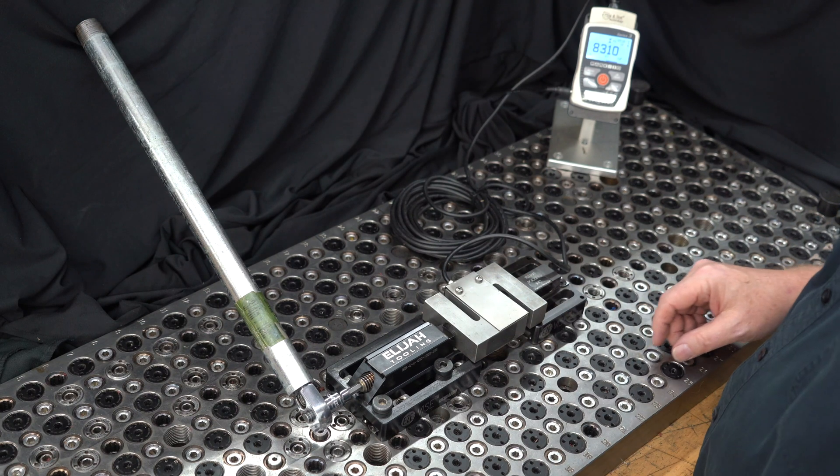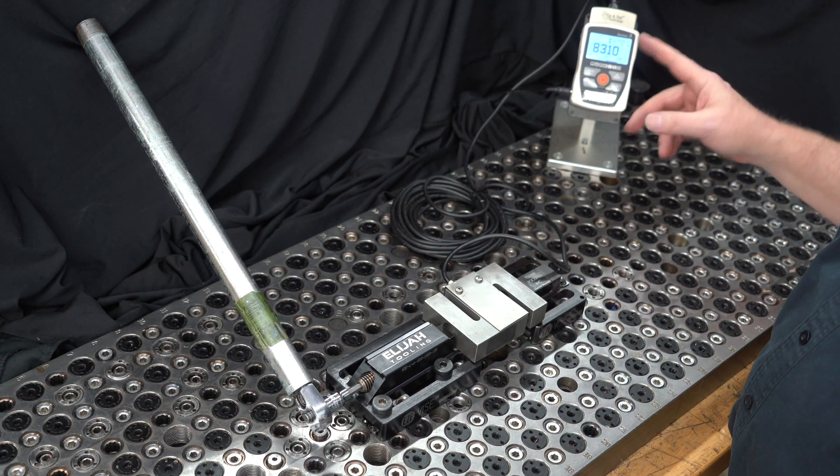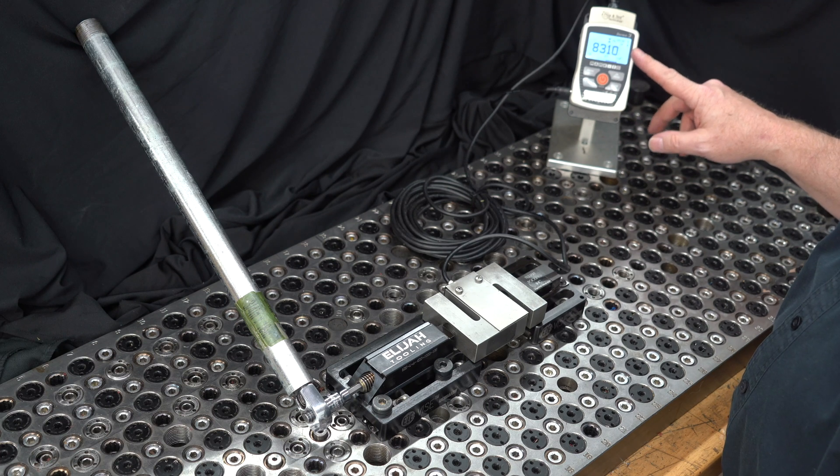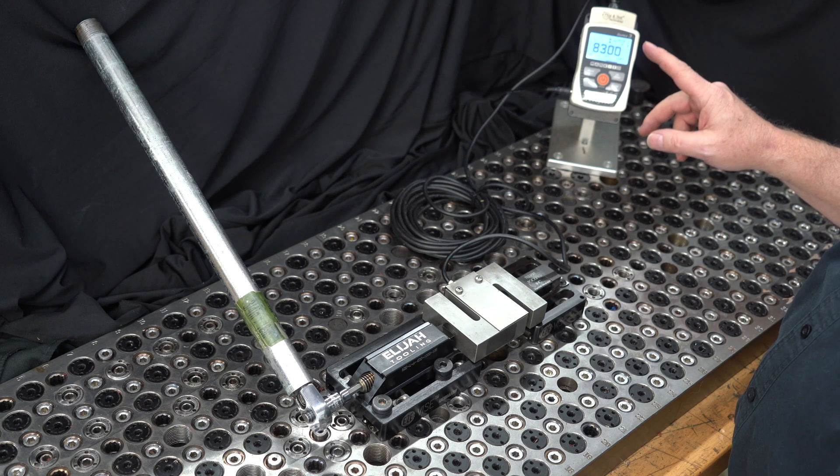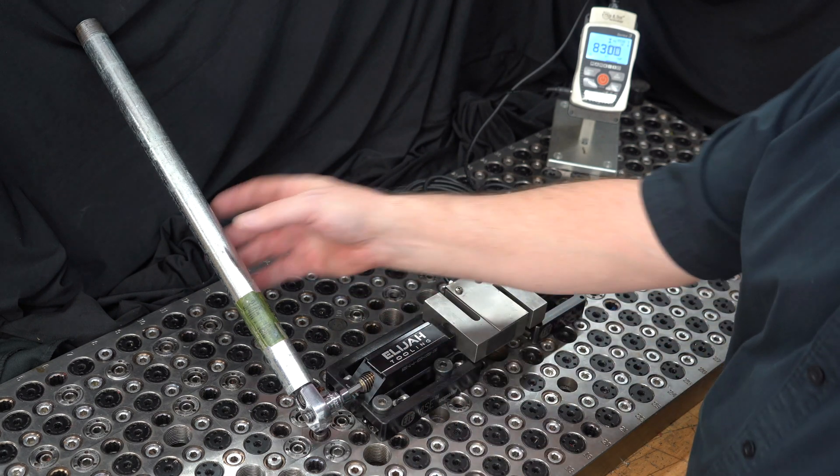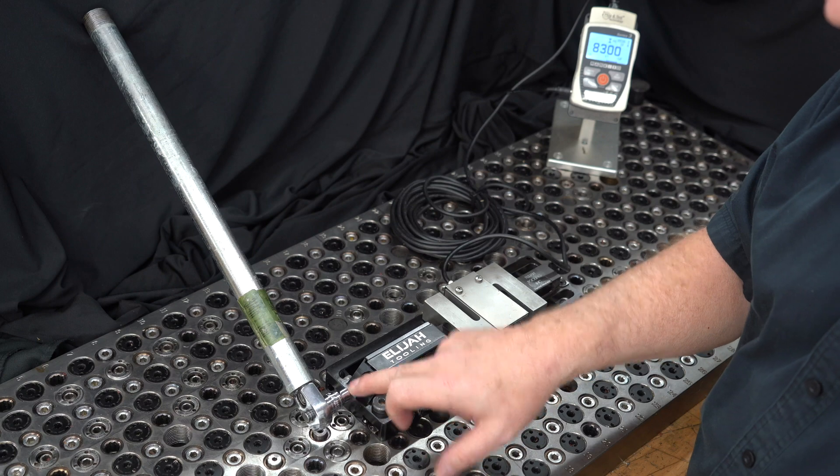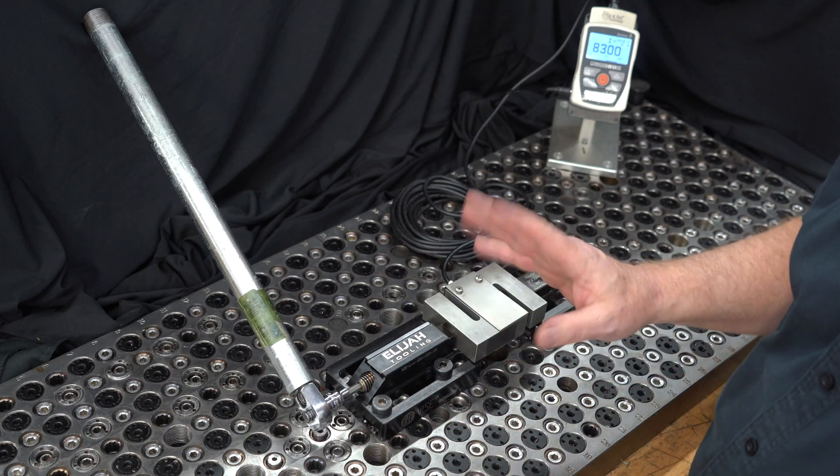Okay, so guys, you can see we attained 8300, we're just gonna call it even, 8300 pound force before our wrench started bending. I don't really know how high this will go if we just took the wrench to failure, but we really don't want to do that.